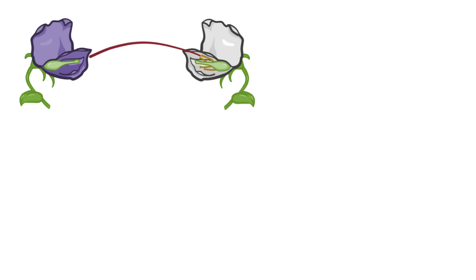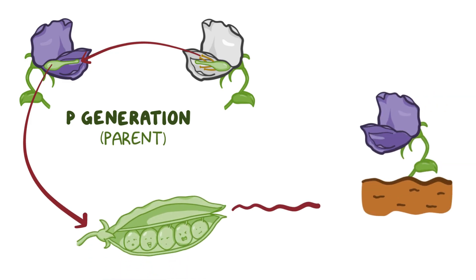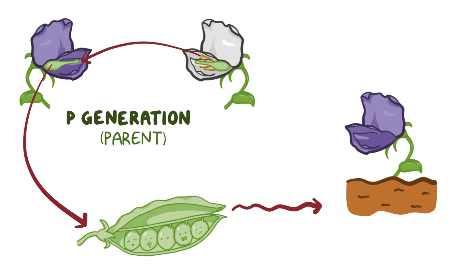To start out, Mendel took plants with violet flowers and plants with white flowers and cross-bred them. This original group of flowers are called the P generation, as in parent. When he obtained some peas, he planted them and got more plants, and the flowers in this offspring generation were called F1, or filial 1.